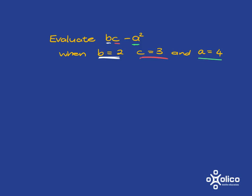Before we do this, we just need to make sure that we can read our algebra correctly. So when we write bc, it means b multiplied by c.